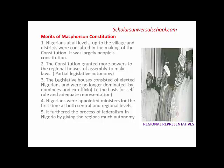Merit number two: the Macpherson Constitution granted more powers to the regional houses of assembly to make laws. Unlike the Richards Constitution, the Macpherson Constitution gave the regional houses in the North, East, and West partial legislative autonomy to actually make laws. In the Richards Constitution, every law had to be referred to the central legislative council to be passed.